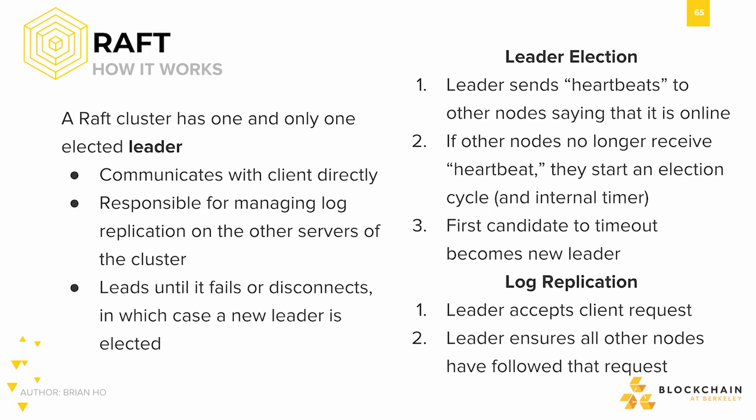Each instance of RAFT has one elected leader, which communicates with the client directly. The leader is responsible for orchestrating the sending of messages to other nodes within the cluster, and for maintaining log replication of everything that happens. The leader accepts a client request, and then oversees all other nodes to make sure that they too have followed the request, and then the log of that request is replicated. The leader leads the whole consensus until it fails or stops, in which case a new leader is elected, and the consensus algorithm proceeds in partial synchrony.